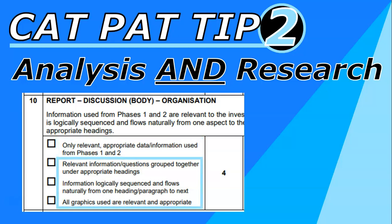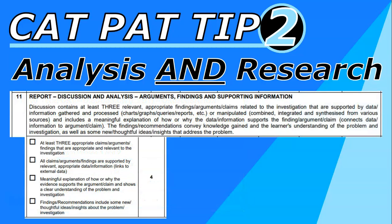Make sure that you are grouping specific content together — themes and topics that are similar — so it flows and is easy to read, and include graphics that are relevant and appropriate. It doesn't always have to be a chart; it could be something related to the topic as long as it's relevant. The rubric mentions process charts, graphs, queries, and reports from phase two, but also various sources from phase one where information was gathered and manipulated.